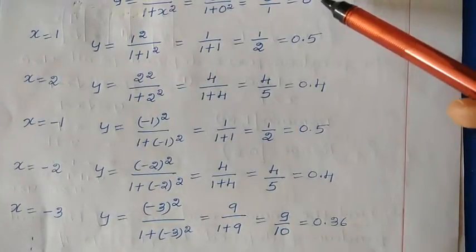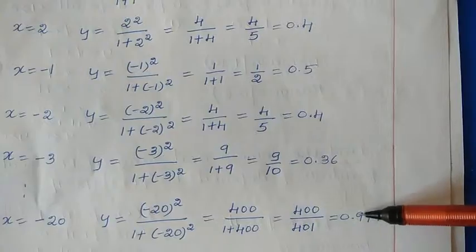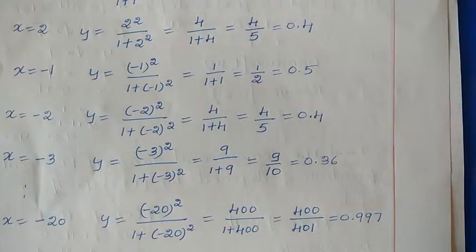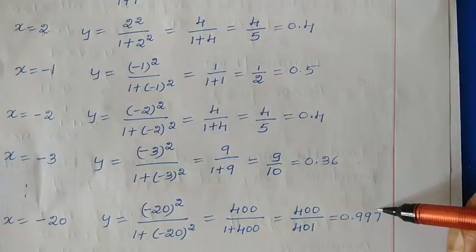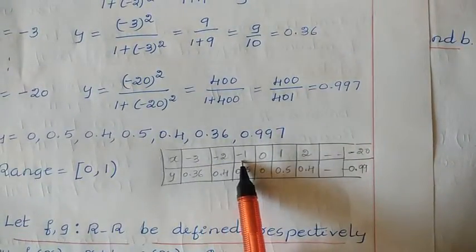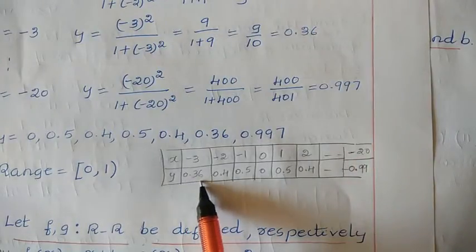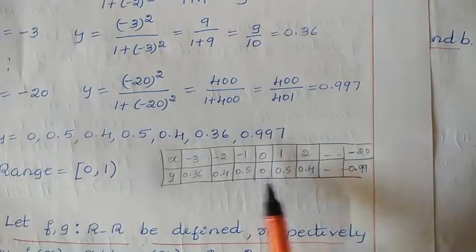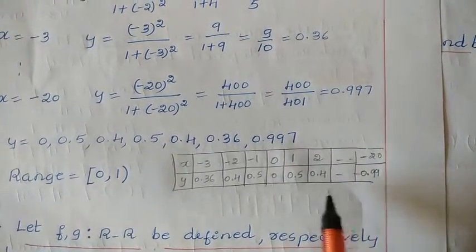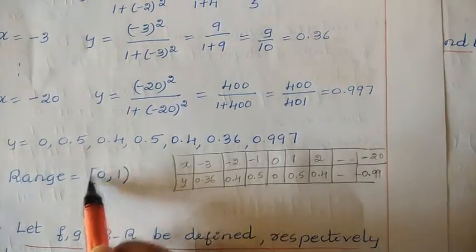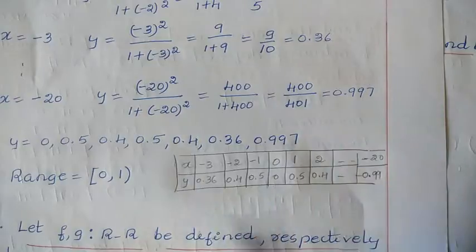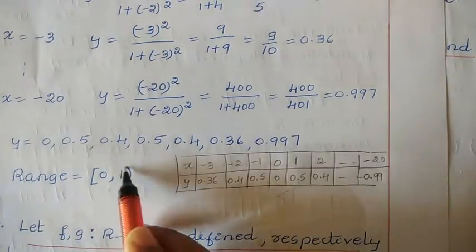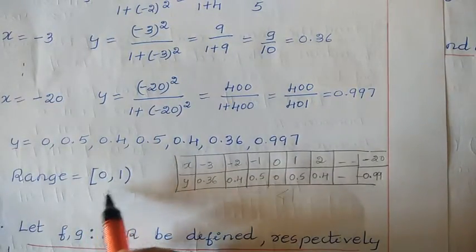If you observe from the beginning, as x increases it goes toward a large quantity like 0.9999, but it is not reaching 1 — 1 is not included. It will always be less than 1. So the range begins from 0 and is less than 1. From the table, we get values 0.36, 0.4, 0.5, up to 0.99, and the smallest value is 0. Therefore, the range is the closed interval [0, 1) — 0 is included and 1 is not included, since all values are less than 1.